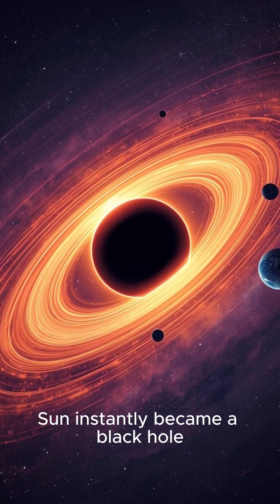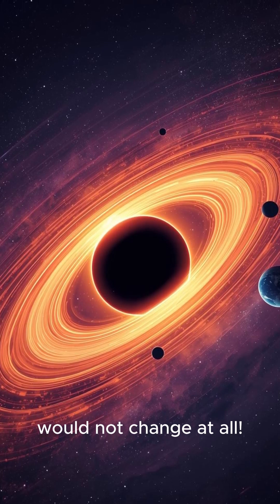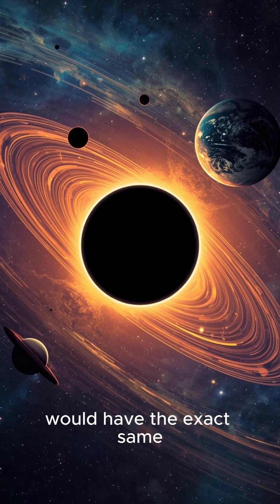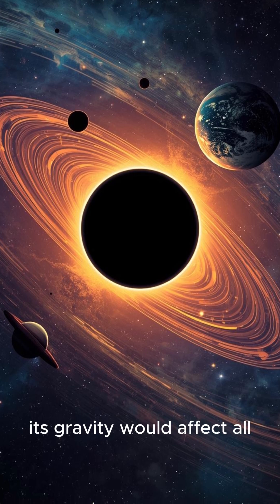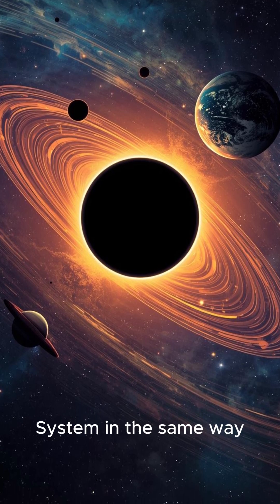Second, if our Sun instantly became a black hole, Earth's orbit would not change at all. Since the black hole would have the exact same mass as the Sun, its gravity would affect all planets in the solar system in the same way.